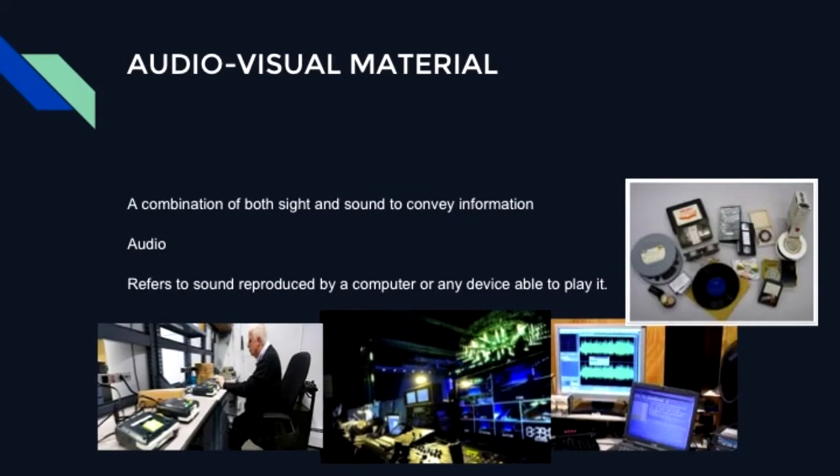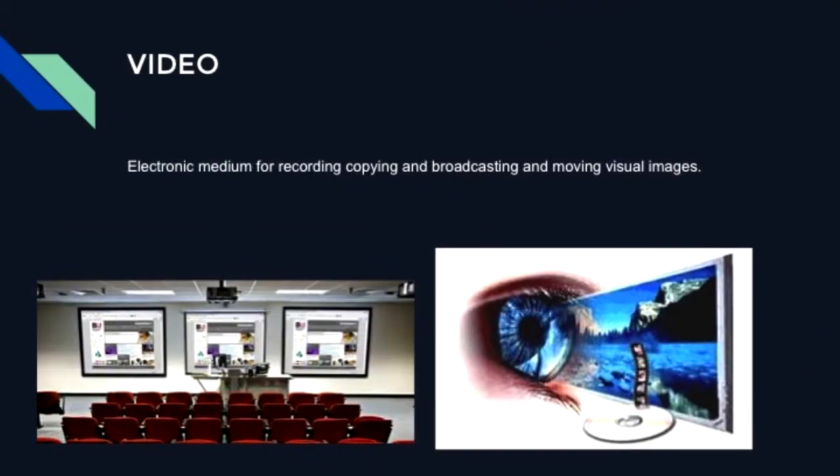A combination of both sight and sound is used to convey information. Audio refers to sound reproduced by a computer or any device able to play it — defined as anything related to sound in terms of perceiving, transmitting, and reproducing at its specific frequency. Video is an electronic medium for recording, copying, broadcasting, and displaying moving visual images.